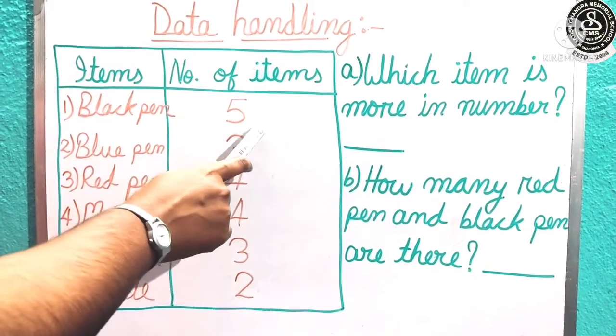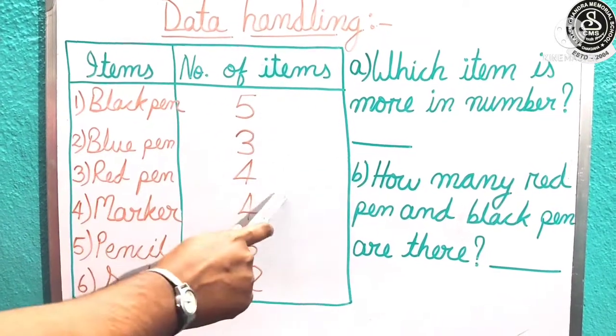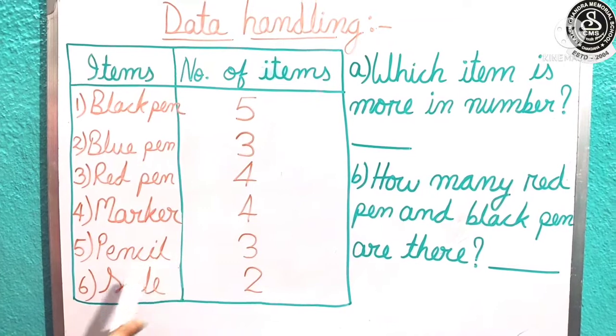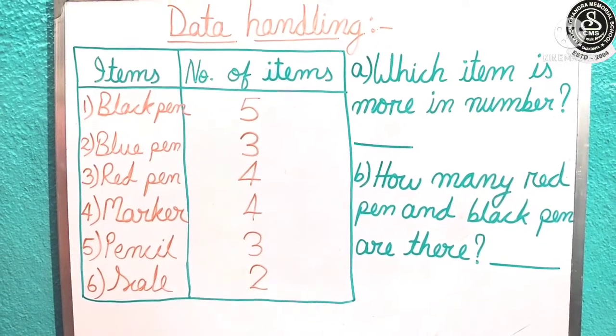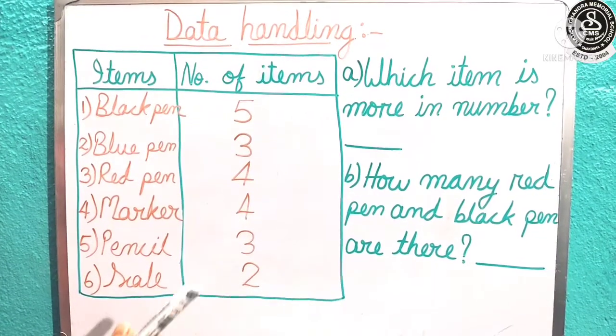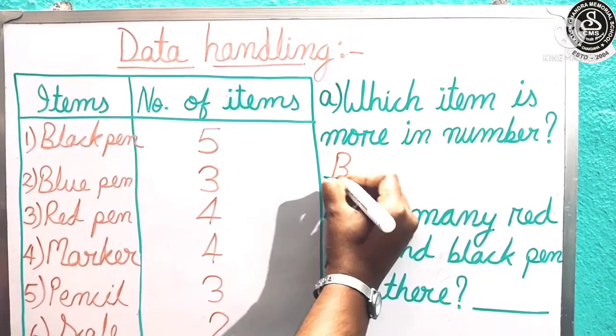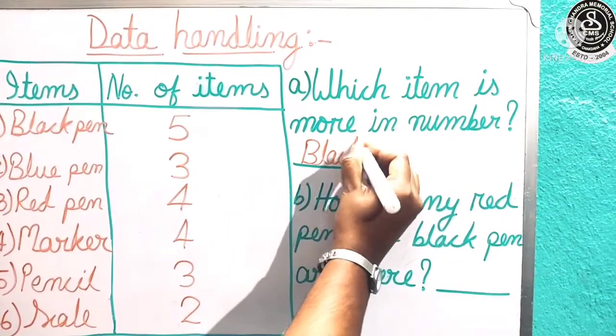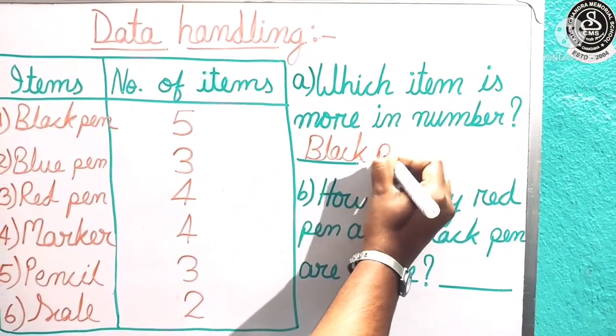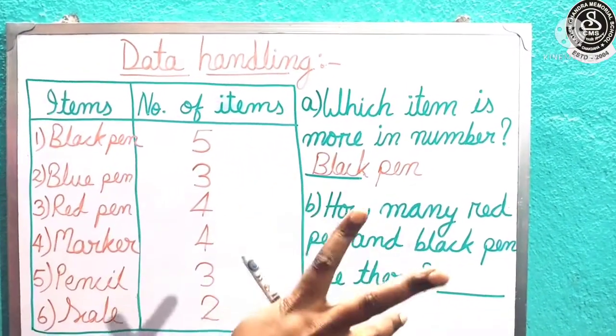Black pen, let us check: 5. Blue pen: 3. Red pen: 4. Marker: 4. Pencil: 3. And scale we have 2. Which is more in number? Yes, the black pen. We are writing here the answer, which item. We will write the item name: Black pen. Which item, so item name, not number.